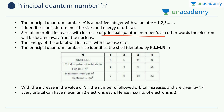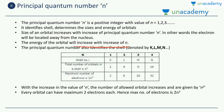As we increase the principal quantum number, the size increases — in other words, the electron will be located further away from the nucleus. The energy of the orbital will also increase with the increase in N. As we move higher in the principal quantum number N, the energy of that orbital keeps on increasing, as we saw previously. The principal quantum number N also identifies the shell, which is nothing but the orbit number. So N, orbit number, and shell number are one and the same thing.